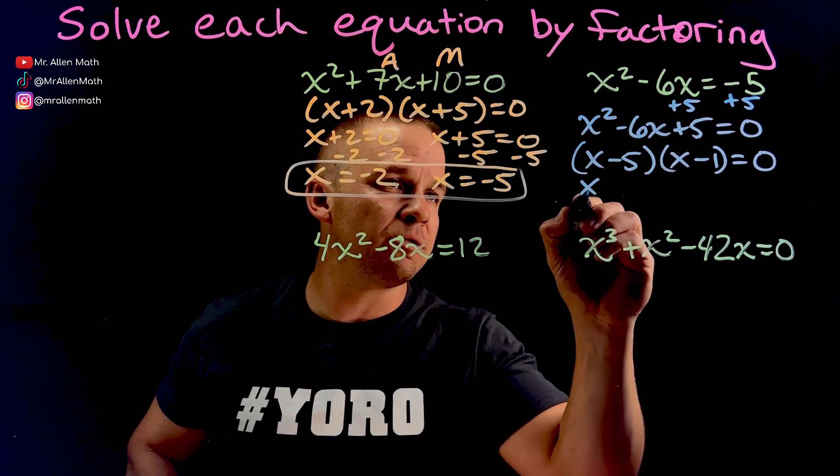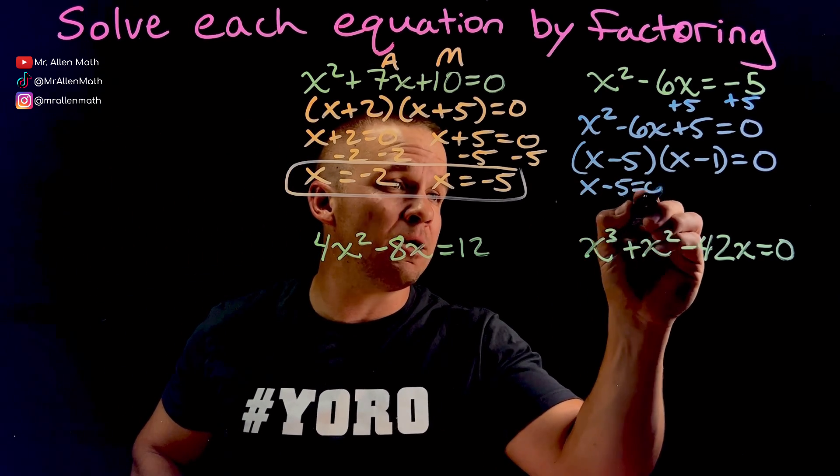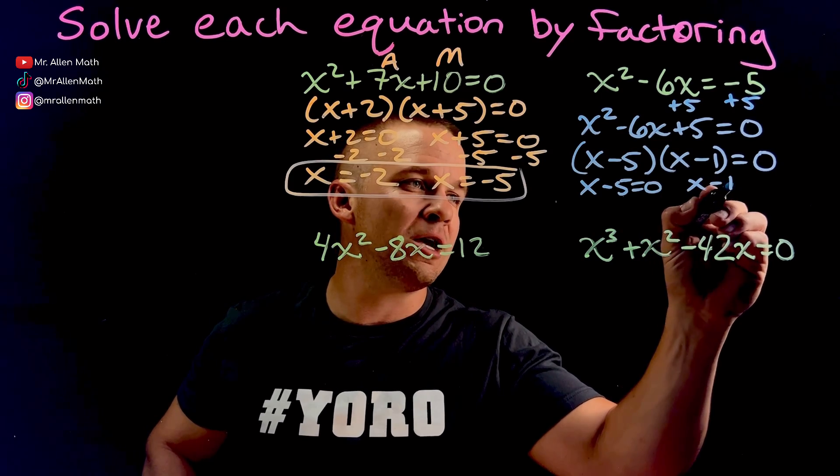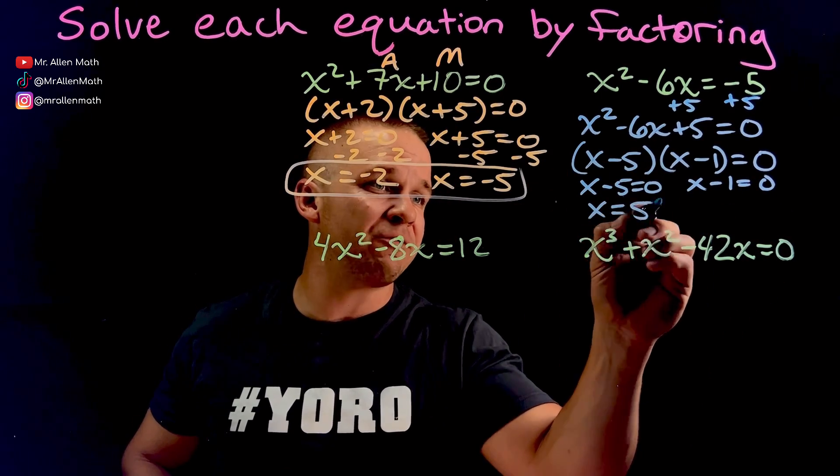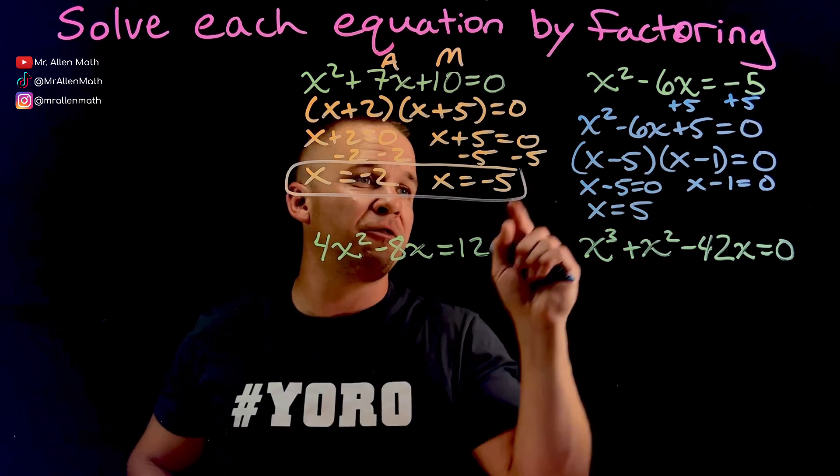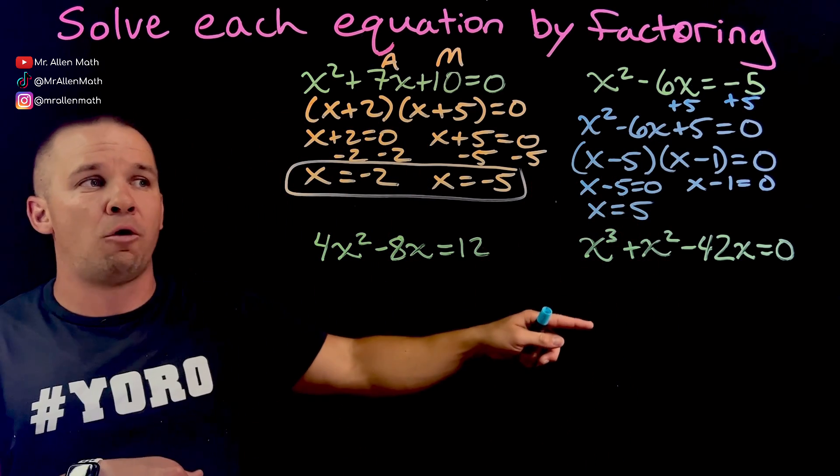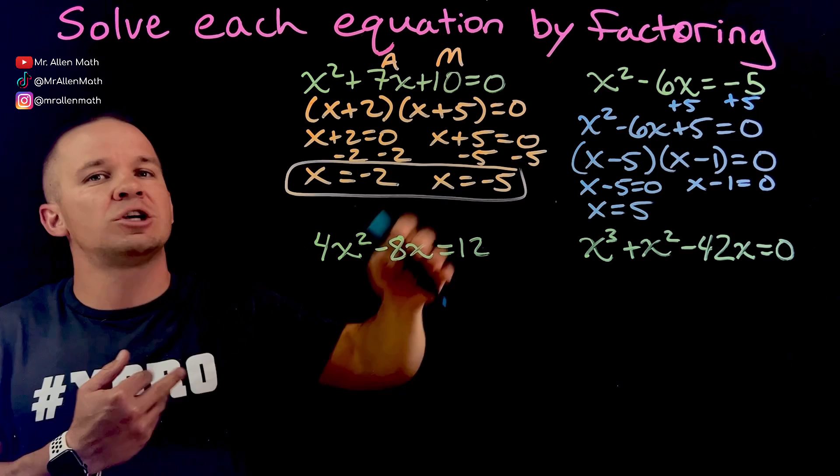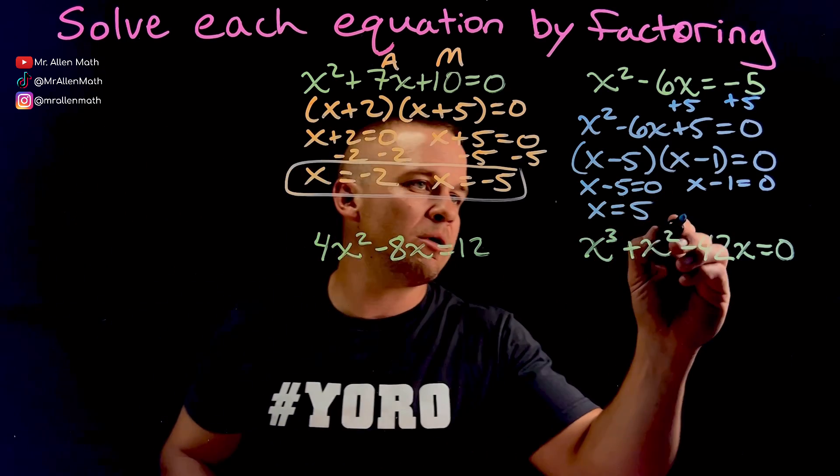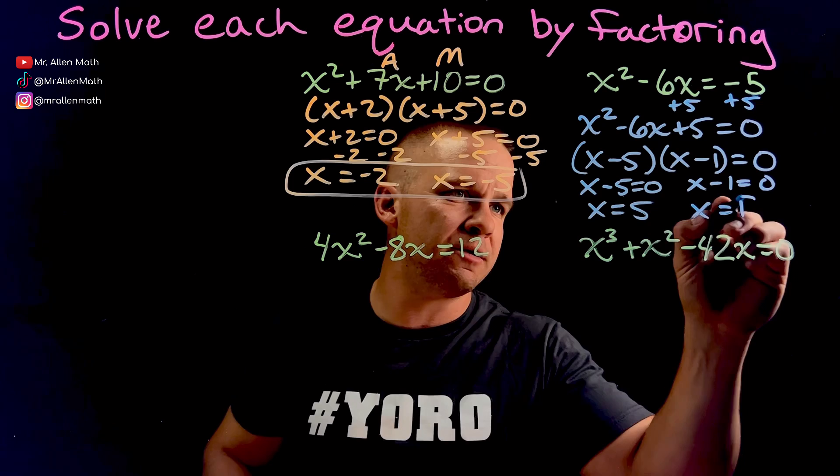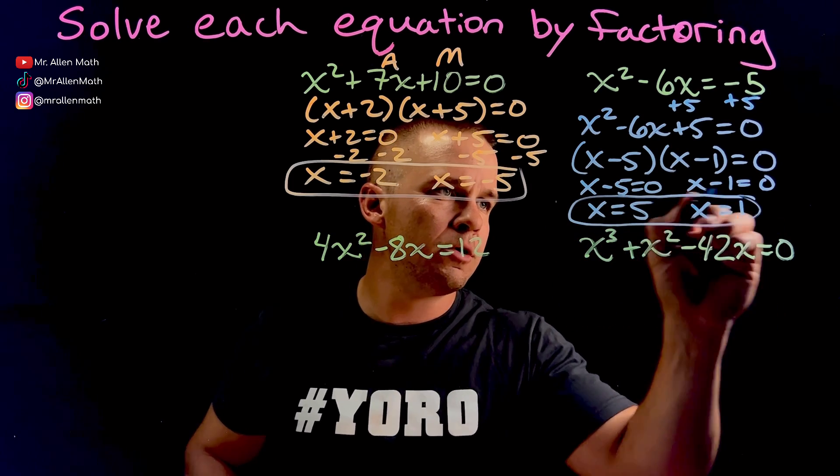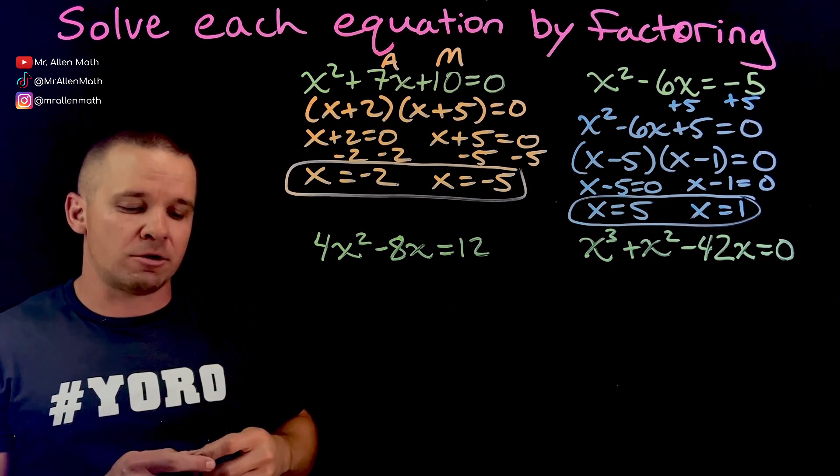Now I got to set these factors equal to 0 because if I can get one of them to equal 0, then the whole thing equals 0, right? I'm going to get X equals 5 after I add 5 to both sides. If I plugged 5 in there, I'd get 0 times 4. That's 0. I don't care about the other factor, just about the one that I got to be 0. The same goes here with the 1. X minus 1, I'm going to add 1 and get X equals positive 1. Those are my two solutions for that particular equation.